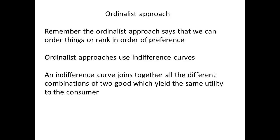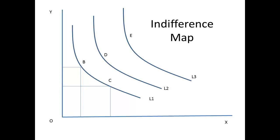In contrast to the cardinalist approach, we have the ordinalist approach which ranks goods in order of preference. Ordinalists make use of the idea of indifference curves. An indifference curve will join all the different combinations of two goods which will yield the same utility to the consumer. The vertical axis measures the quantity of good y, and the horizontal axis measures the quantity of good x. The consumer is said to be indifferent to the combinations represented at points b and c because they are on the same curve.